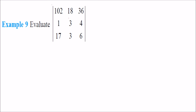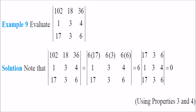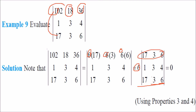Evaluate this determinant. The first row 1, 0, 2 can be written as 6 times another row, this is 6 times 3, and 6 times 6. So we can take this 6 out. Now, the first row and the last row — first and third row — are equal, so the determinant will be 0.